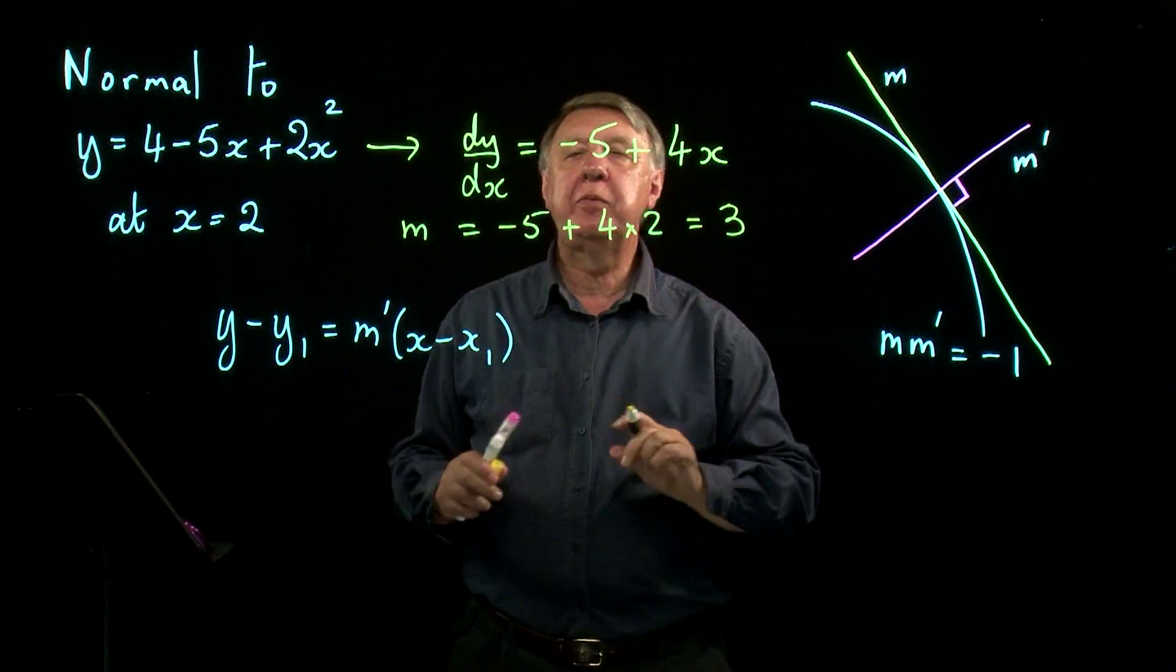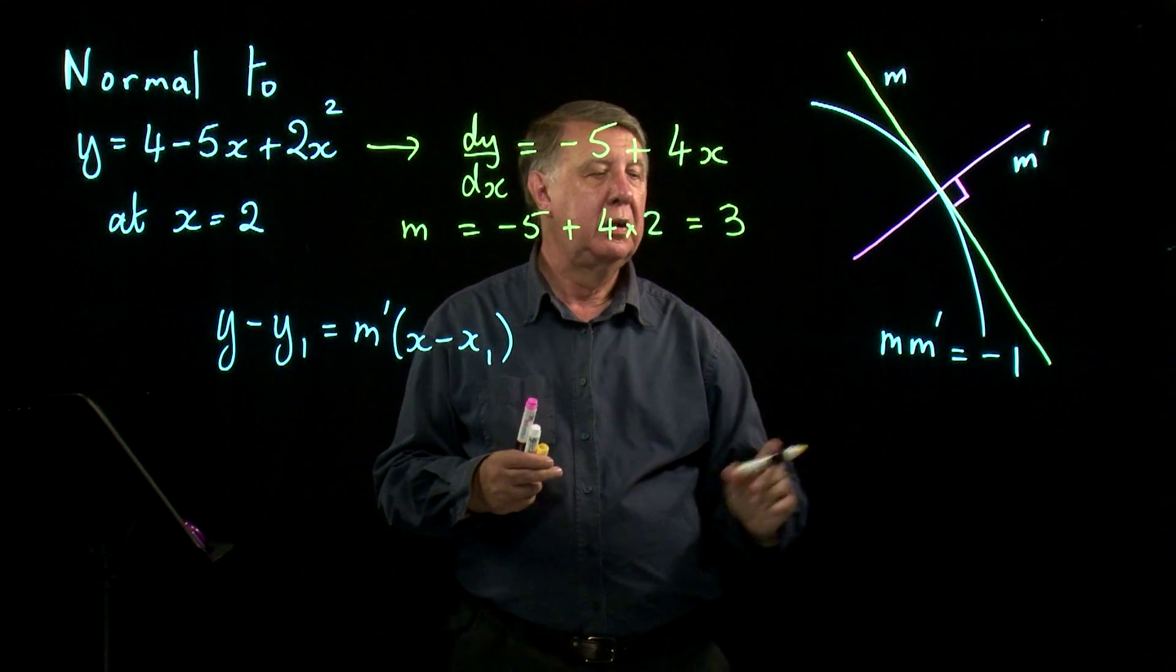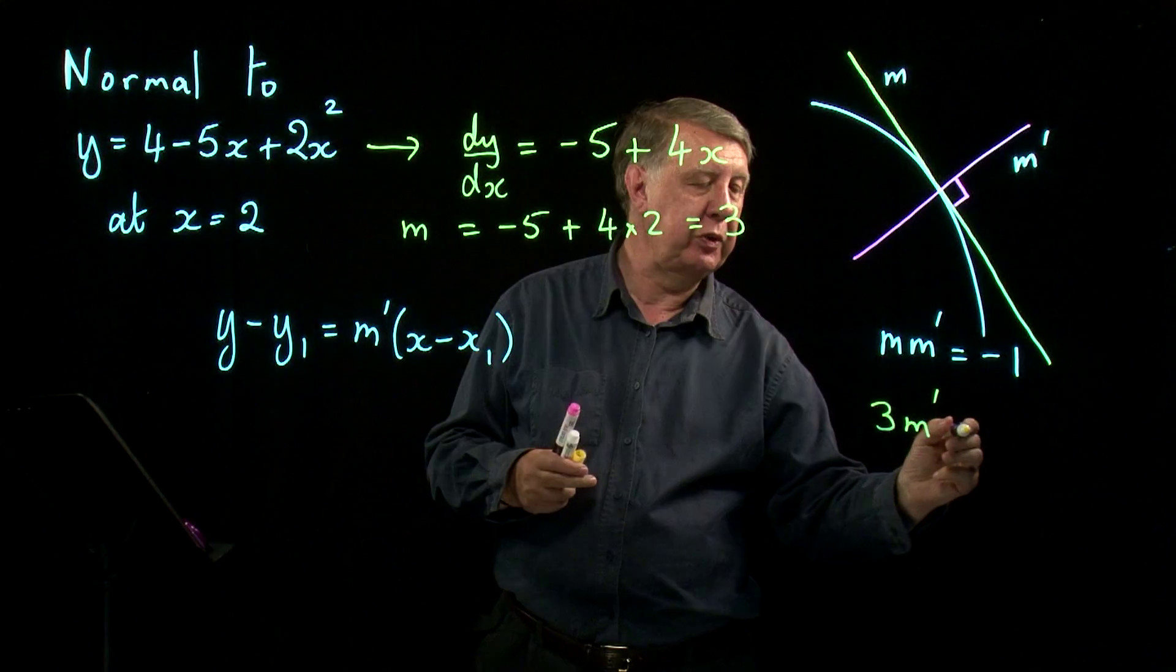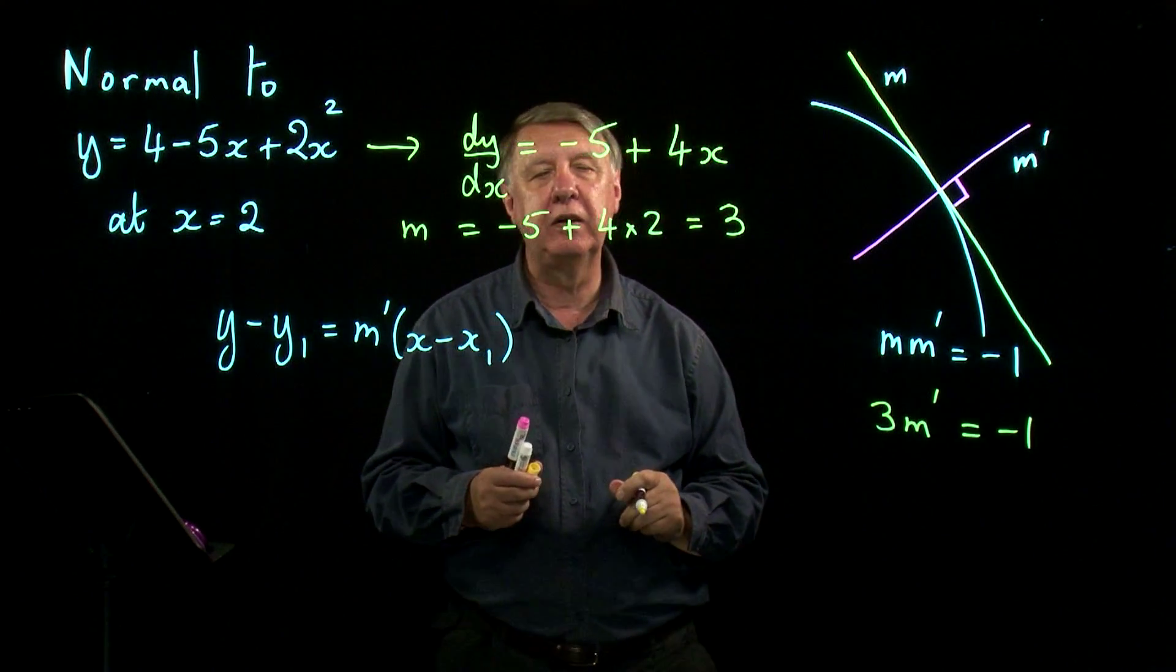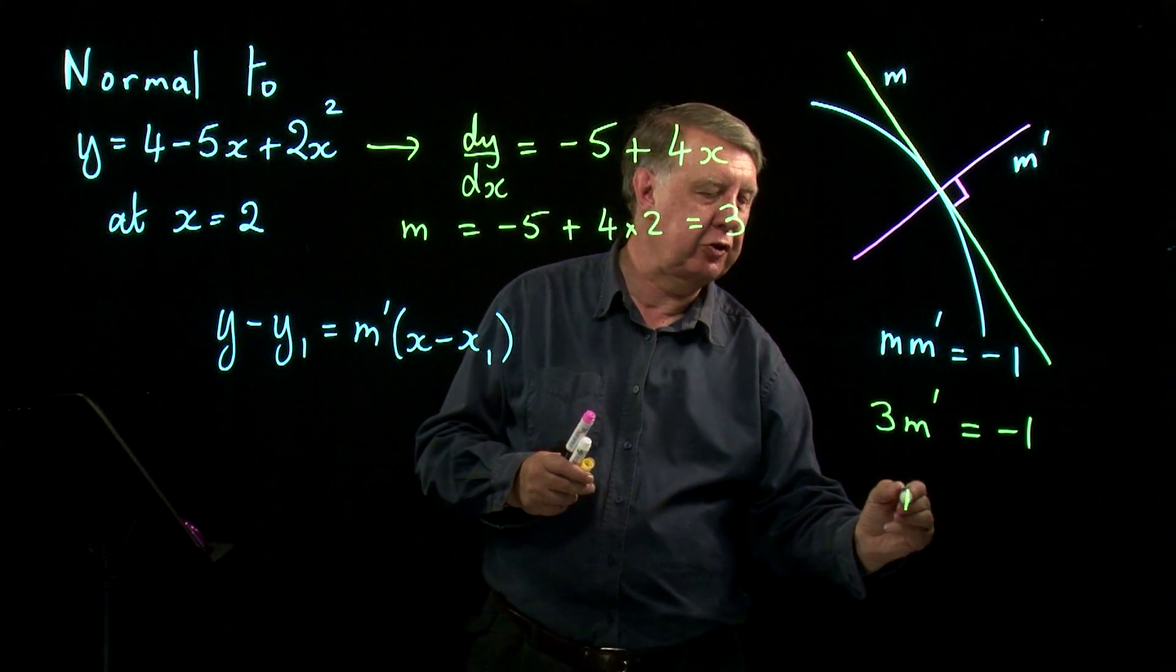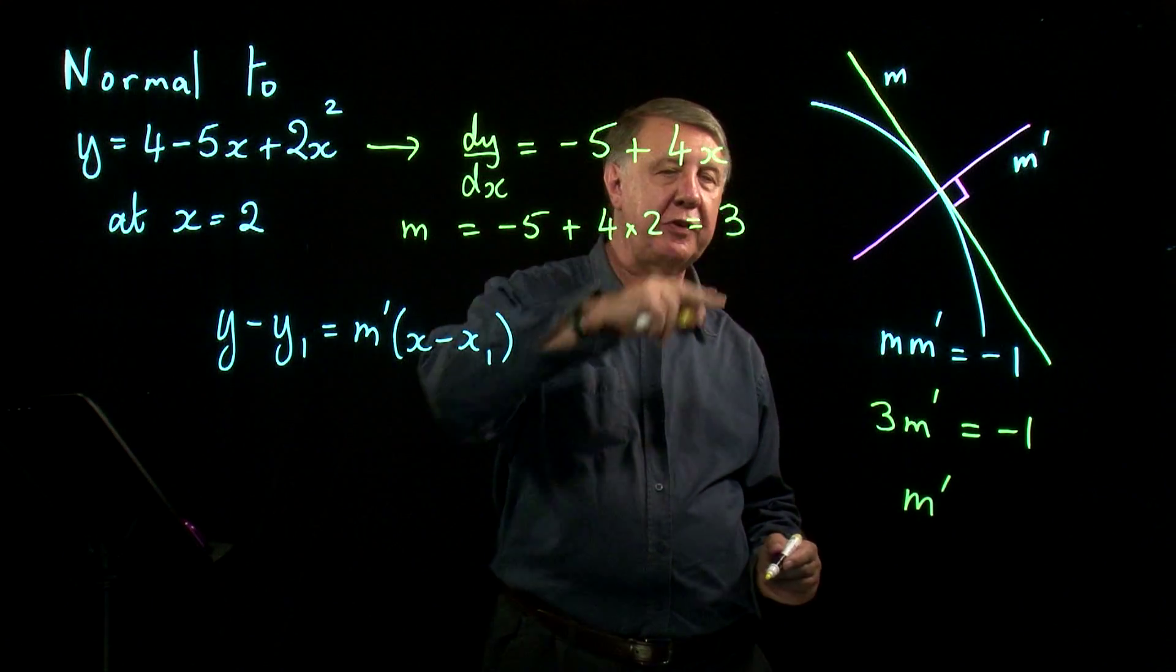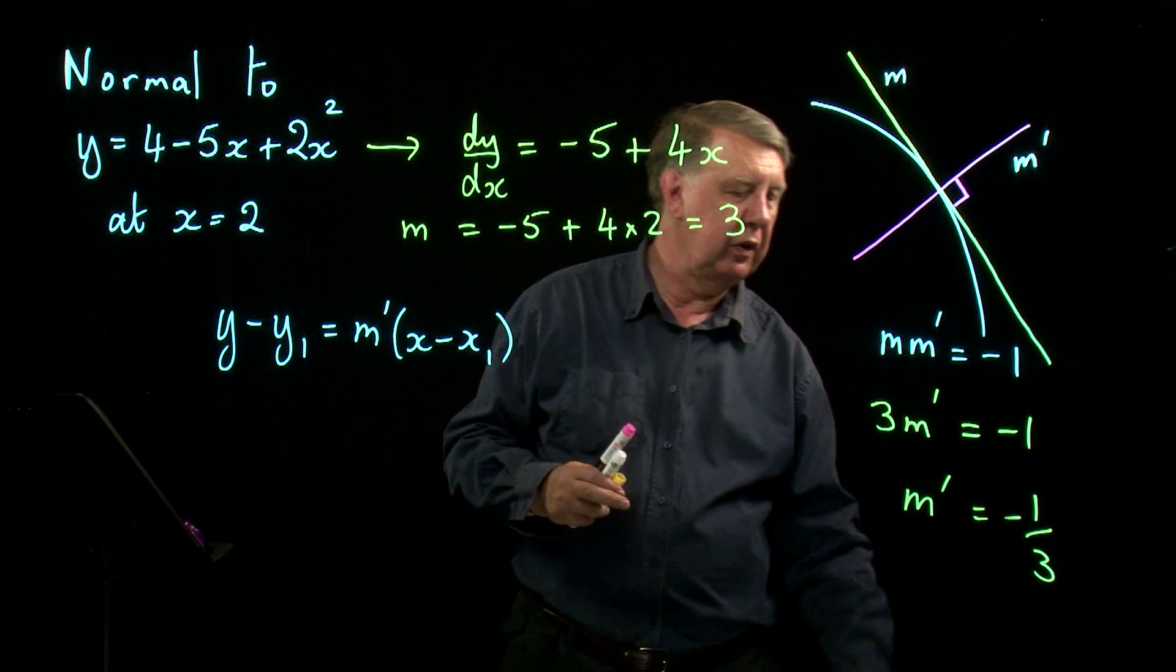Remember m is the gradient of the tangent. Check this over here that m is 3. m dashed we're trying to find. We know that if we multiply them together we get negative 1. So the quick way then of finding m dashed is to invert m, so we invert 3 which makes it a third, and we change the sign.